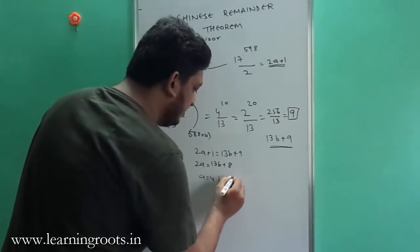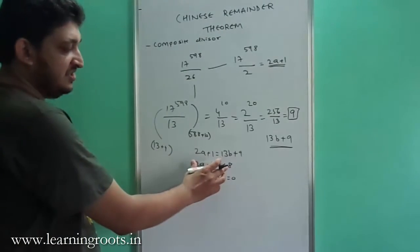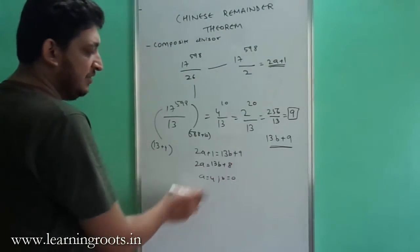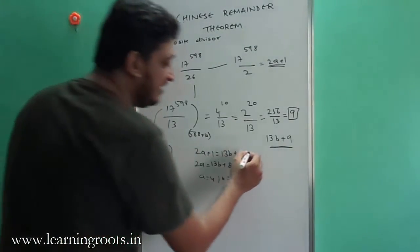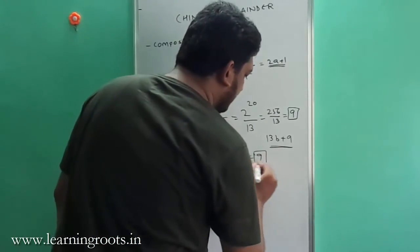If A equals 4 and B equals 0, these values satisfy this equation. Then we can plug this back into these numbers and we can simply say that the remainder will be 9, and that will be your answer.